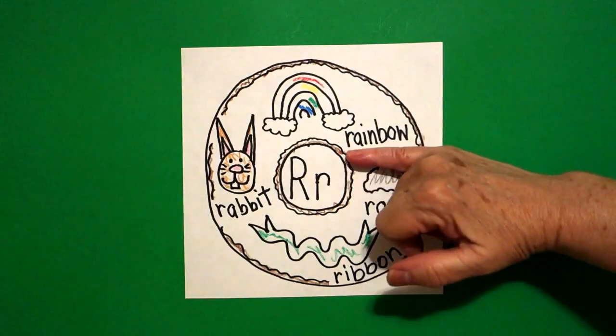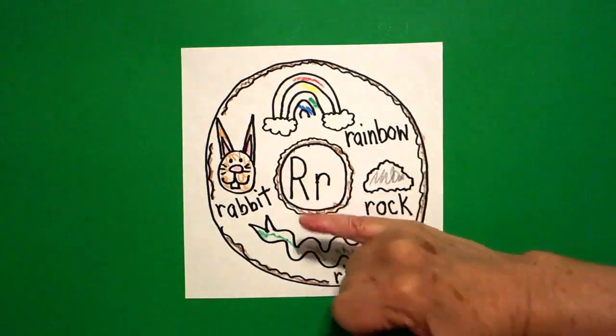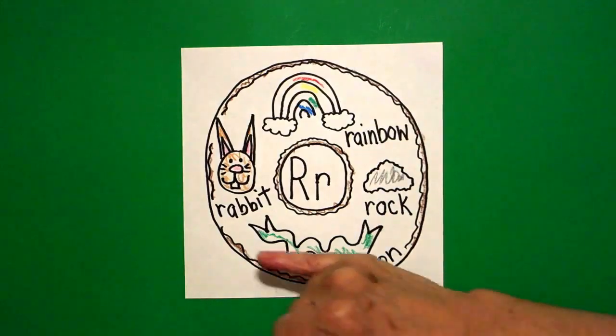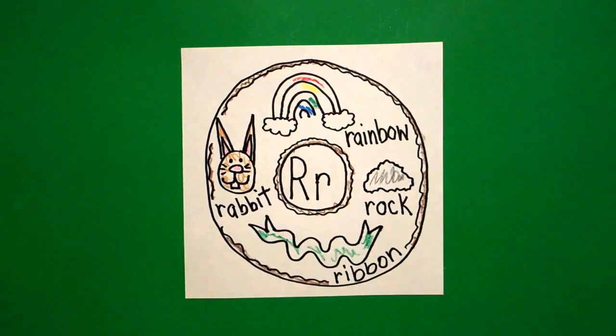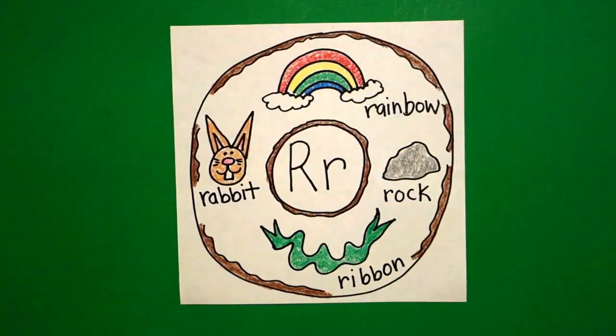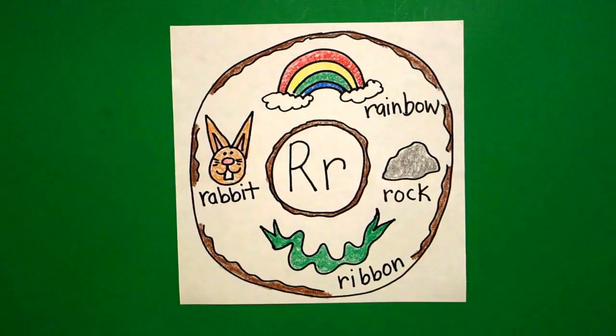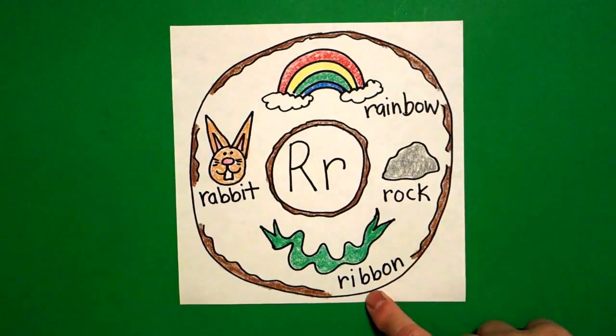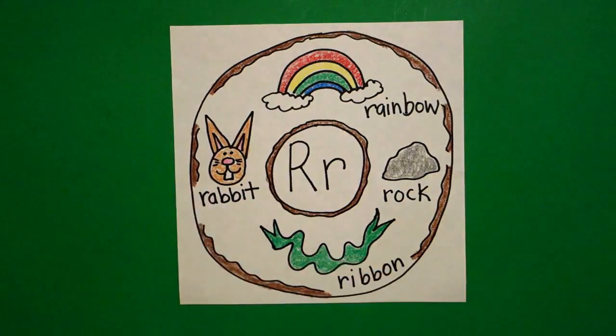Okay, beginning sound R for the letter R. Rainbow, rock, ribbon, rabbit. Okay, let's see what this looks like all colored in. Okay, here's my alphabet donut for the letter R all colored in. Rainbow, rock, ribbon, and rabbit. Okay, bye bye.